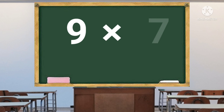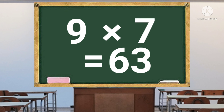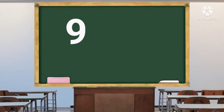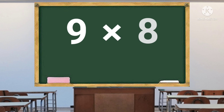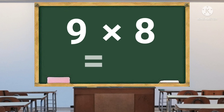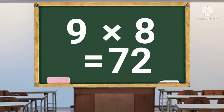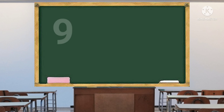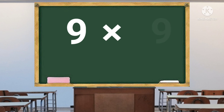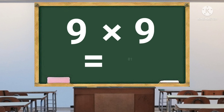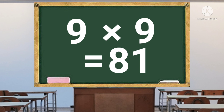9 into 7 is equal to 63. 9 into 8 is equal to 72. 9 into 9 is equal to 81.